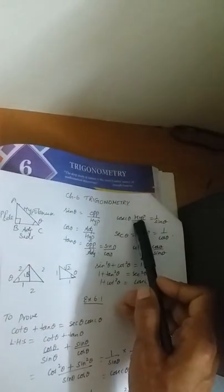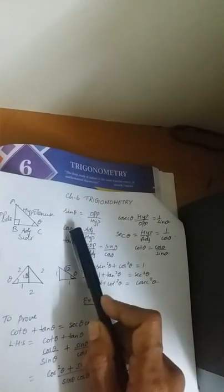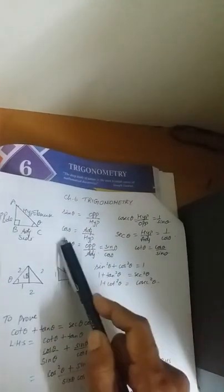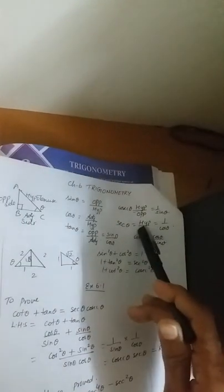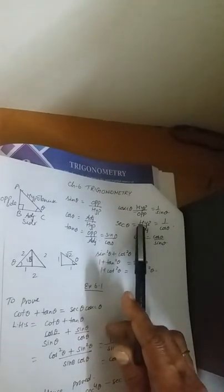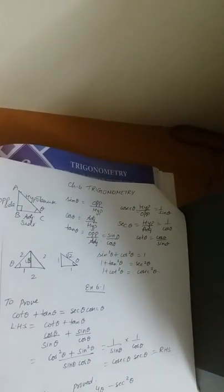These are the reciprocal ratios: opposite of sin theta is cosecant theta - that is 1 by sin theta. Opposite of cos theta is secant theta - 1 by cos theta. Opposite of tan theta is cot theta - that is cos by sin. These are the 6 basic trigonometric ratios.